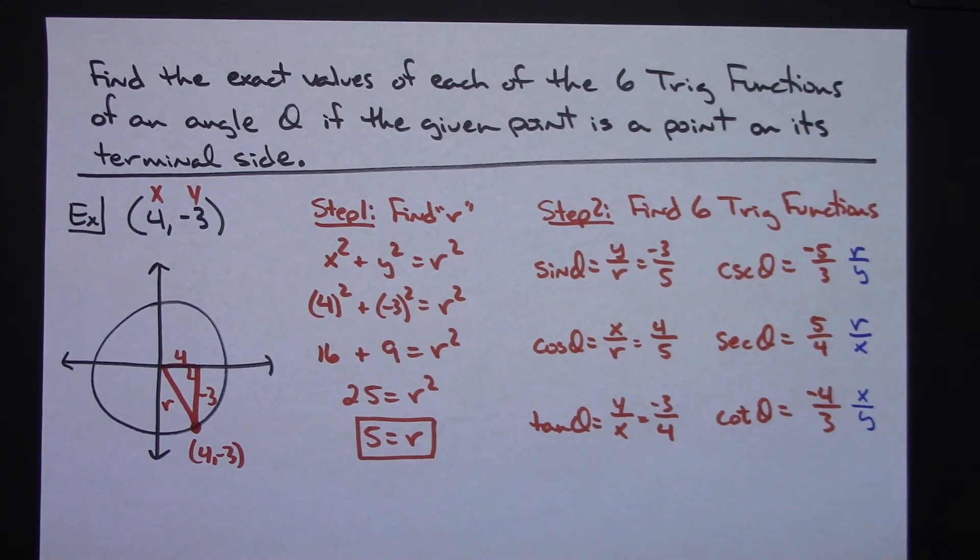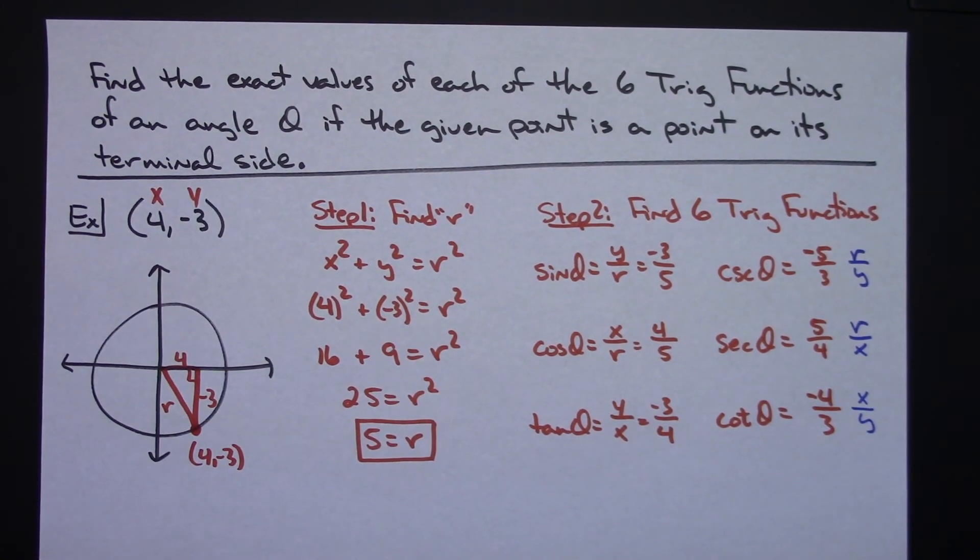But when you are given a point that's on that terminal side, in other words, you've got a circle that's not a unit circle, you first have to calculate what the radius of that circle is, and then you can use your little right triangle with those definitions. Thanks for watching, and don't forget to subscribe to the channel.